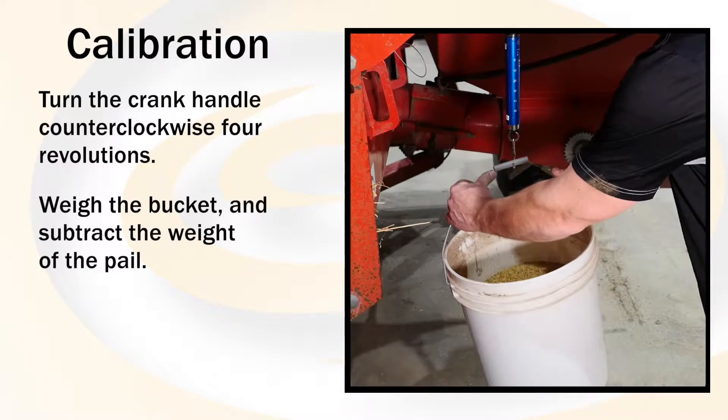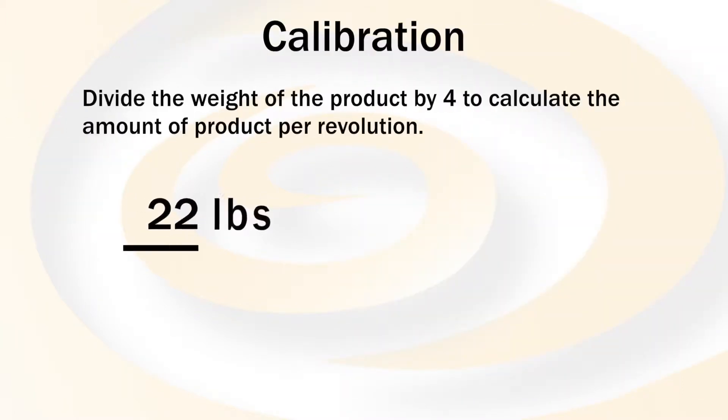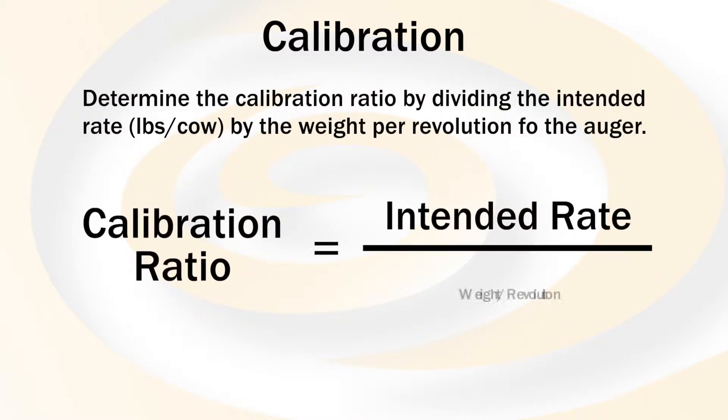Weigh the bucket and then subtract the weight of the pail. Divide the weight of the product by 4 to calculate the amount of product per revolution. Determine the calibration ratio by dividing the intended rate by the weight per revolution of the auger.